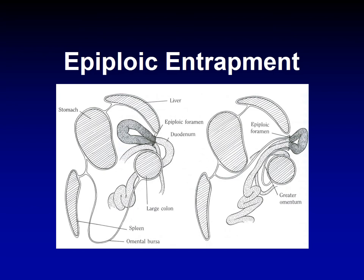We've talked about the inguinal canal, the nephrosplenic ligament, and the epiploic foramen entrapment — three main natural openings that cause entrapment colic in horses. We also talked about the three different areas with acute reduction in diameter that cause impaction colic. These are all anatomical factors based on structural anatomy. Now, what is the other category that causes colic? It is non-anatomical factors.